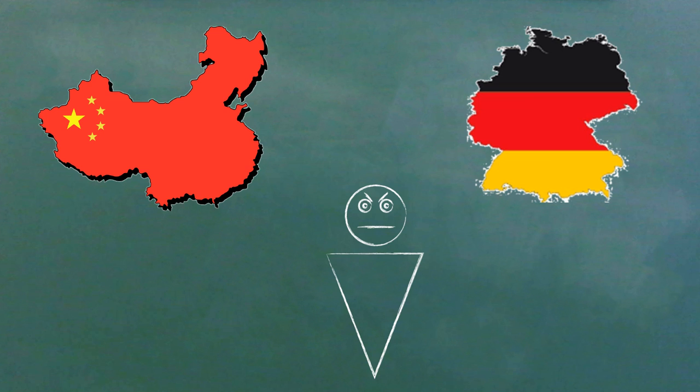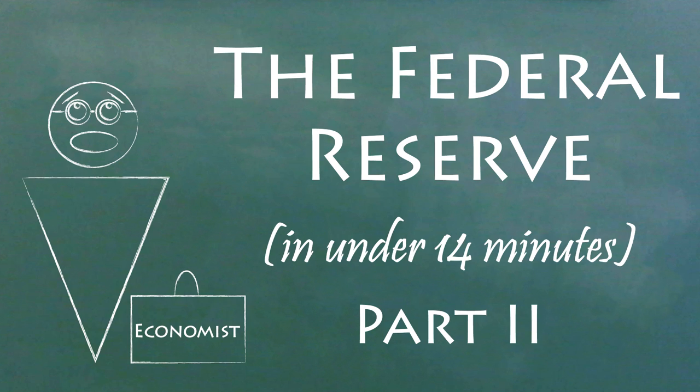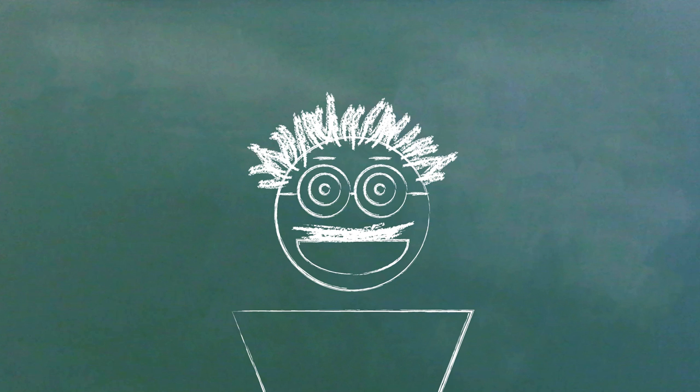On the flip side, other countries complained when we stimulated our economy through the Federal Reserve after the 2008 recession. For more information on how the Fed did it, called quantitative easing, check out the video I made on that. Right now, China might be trying to make its currency more valuable to stop economic problems, so the manipulation could have solved itself.